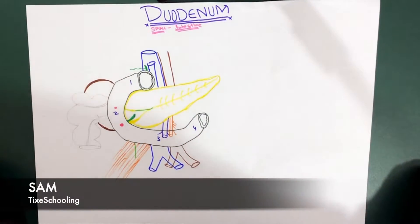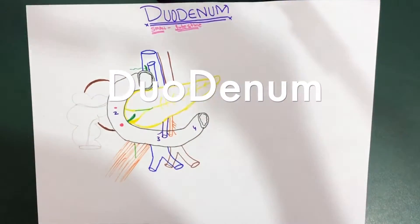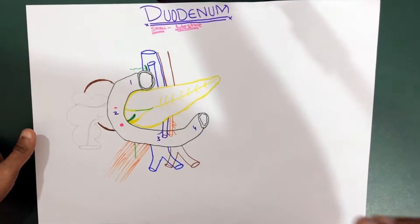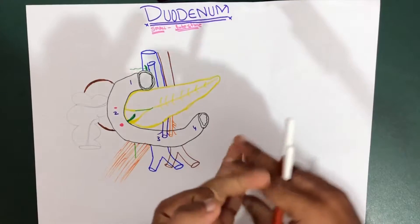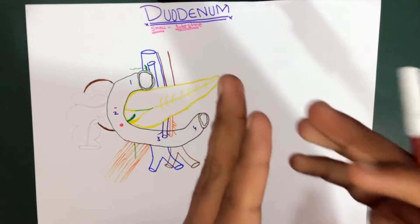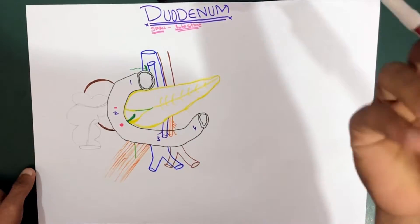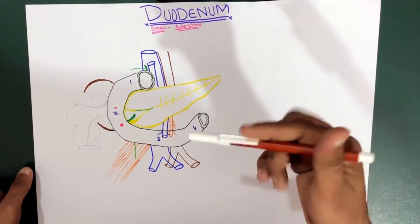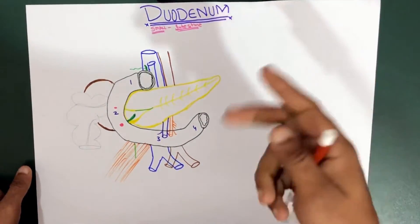Hello YouTube, this is Sam from Tides Schooling. In this session we're going to talk about the duodenum, which is the first part of the small intestine. We're going to cover its four parts and their relations, using this diagram to understand the location and relation of the duodenum with other structures. At the end of the lecture we'll talk about the arterial and nerve supply and the lymphatics of the duodenum.